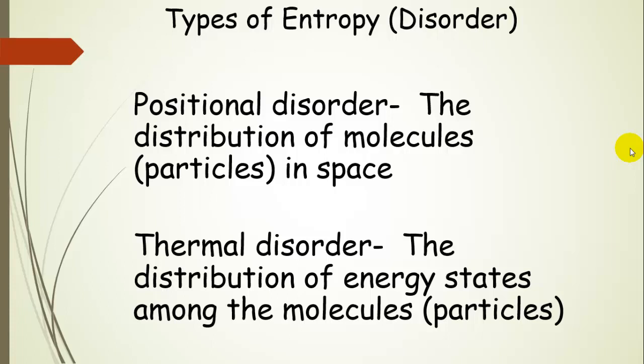There are two types of entropy or disorder. One is positional disorder — that is the distribution of molecules, atoms, ions, or particles in general in space. Another type is thermal disorder, which has to do with the energy states among the molecules. This is fairly complex, so we won't go deeply into the detailed hows, but we will talk about it in general and how to predict entropy depending on what is happening with the temperature.